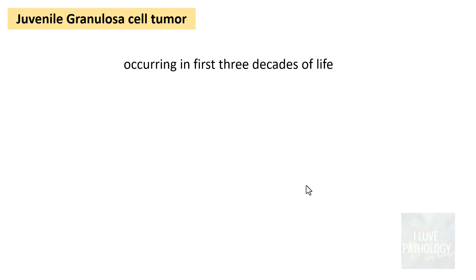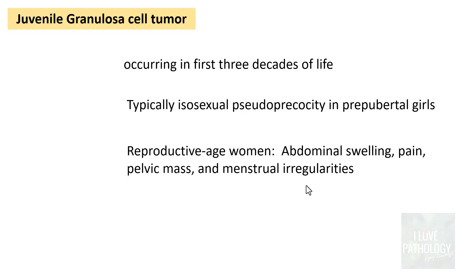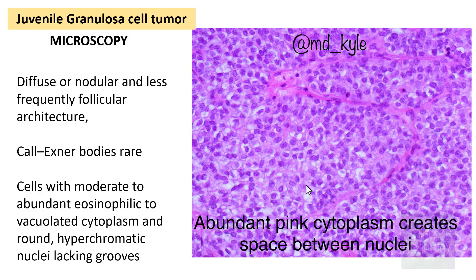Juvenile granulosa cell tumour occurs in the first three decades of life. In children, increased estrogen causes isosexual pseudo-precocity in pre-pubertal girls. In reproductive age women, it manifests as abdominal swelling, pain, pelvic mass, or menstrual irregularities. Microscopically, the growth can be diffuse or nodular with very infrequent follicular architecture. Call-Exner bodies are absent or very rare, and the grooved nuclei typical of adult granulosa cell tumours are not seen; cells have abundant eosinophilic cytoplasm.